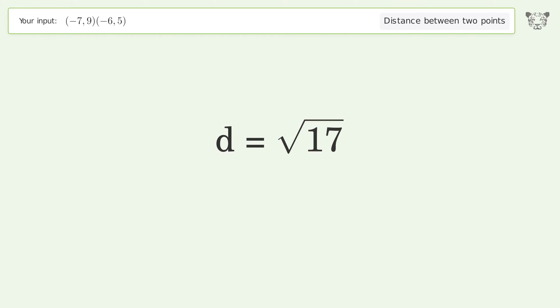And so the distance between the two points is the square root of 17, or 4.123.